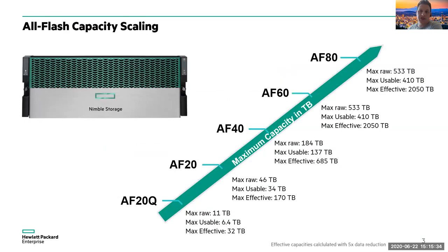As we look at the all-flash systems, these are the scale-deep options for capacity. The partially populated AF20Q starts at 11 terabytes raw and grows as you fill it out. Looking at the regularly populated AF20s, 40s, 60s, and 80s, as the controllers become more powerful, they're able to manage more metadata, and you can go to a higher raw capacity — all the way up to 533 terabytes raw.